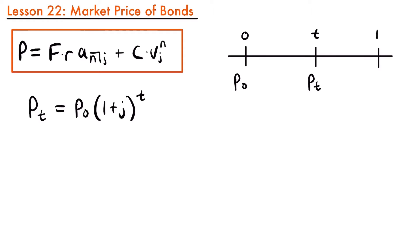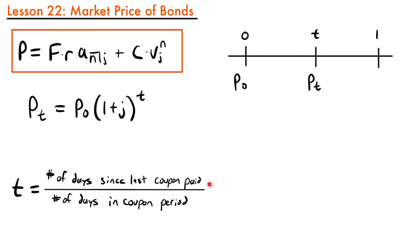This accumulates the interest from the yield rate on the bond from its last known value on a coupon date and brings it forward to that time in the future between the two coupon dates. The value of t numerically would be a fraction where the numerator is the number of days since the last coupon was paid, divided by the denominator, which is the number of days in that coupon period — that is, between when P sub 0 was calculated and when the next coupon period would have been.